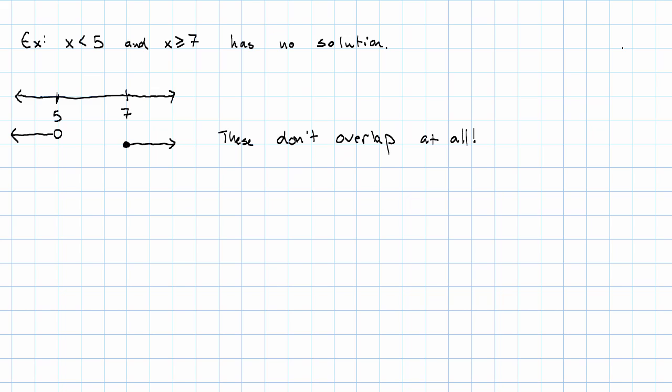So, those are the possibilities, right? Our arrows can go in opposite directions and overlap in the middle. They can both go to the right and overlap at the right end. They can both go to the left and overlap at the left end. Or, they can go in opposite directions and not overlap at all.